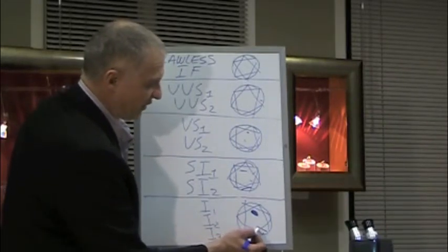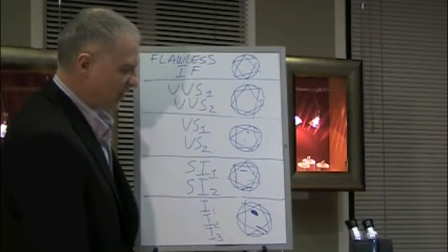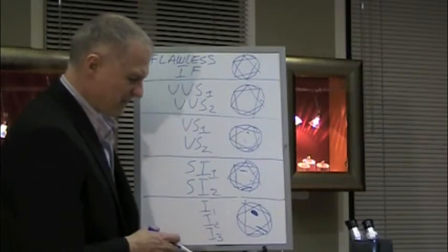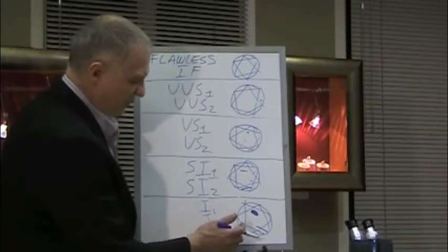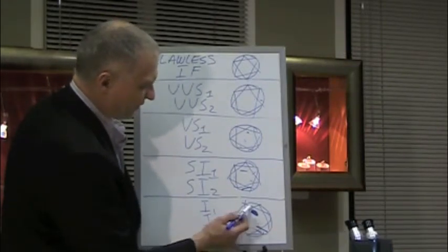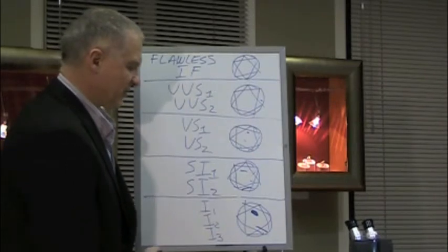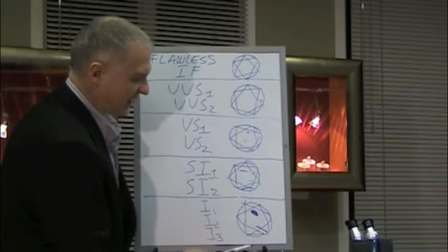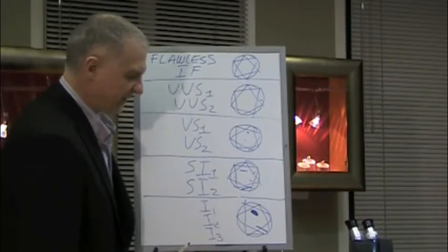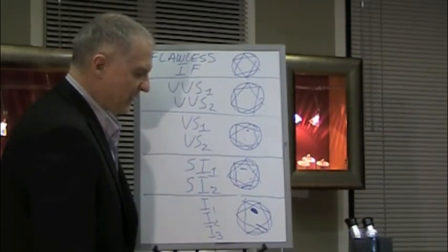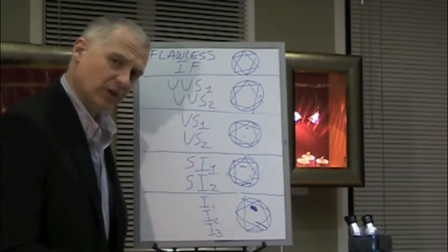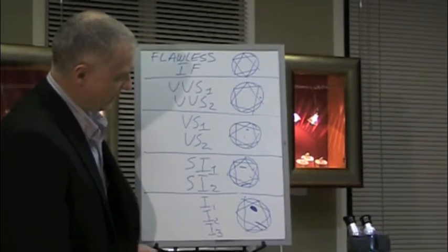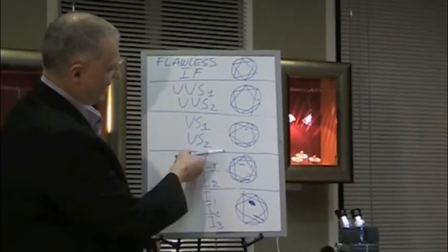Now I usually don't sell these. Occasionally I do if somebody's budget dictates it and they have to have a certain size. But it's very tricky because with the I1s, I2s, I3s there's a lot going on in there. And not only can you see the individual flaws with the eye, but because they're so large they actually block the light going in and being reflected out. So they can be a little on the dull looking side because of the many inclusions inside.